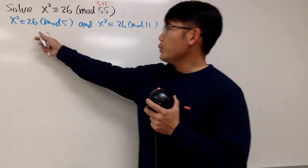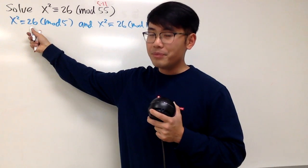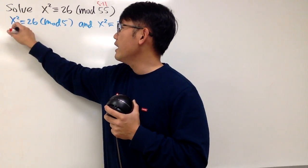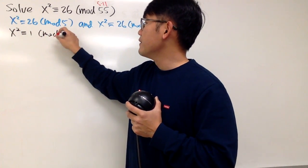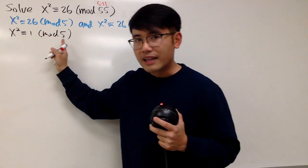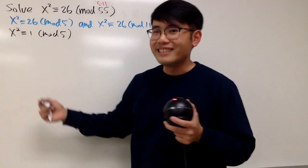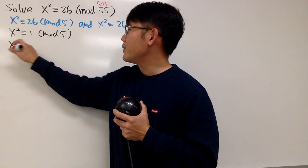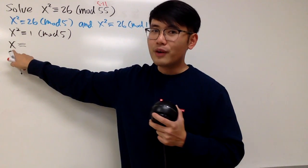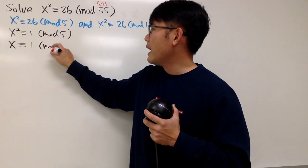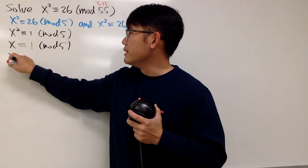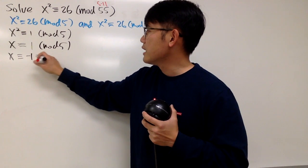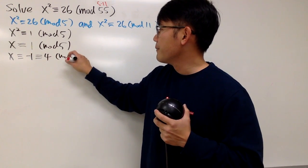Let's solve the mod 5 case first. We have 26, and 26 is congruent to 1 in the mod 5 world. So this is the same as saying x squared is congruent to 1 mod 5. And since 5 is prime, we can take the square roots on both sides — don't forget the plus or minus 1 on the right-hand side. So you have two situations: x is congruent to positive 1 mod 5, and x is congruent to negative 1, which is the same as congruent to 4 mod 5.